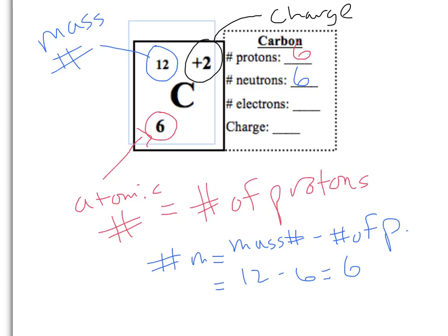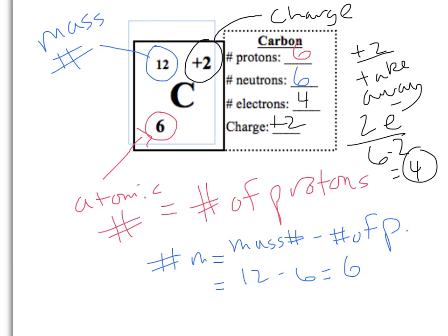However, my charge here is plus 2. I can't take away any protons, but I can take away electrons. So if I have a charge of plus 2, that means I have to take away 2 electrons, which means I should have 6 minus 2. I should have 4 electrons, which makes my charge plus 2.